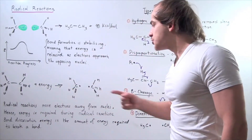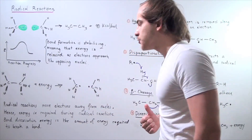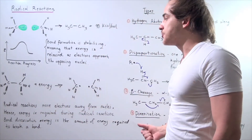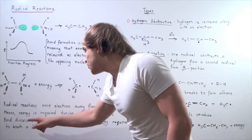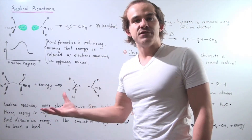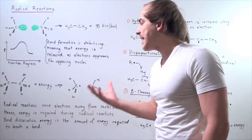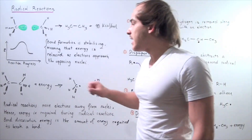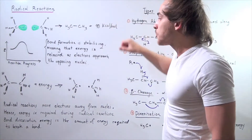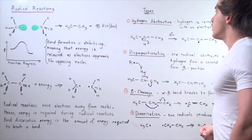Radical formation reactions move electrons away from the nuclei, and hence energy is required during radical reactions. Bond dissociation energy is simply the energy required to break a given bond. Different types of bonds have different bond dissociation energies. For this specific bond in ethane, it requires 90 kilocalories per mole to break that bond.